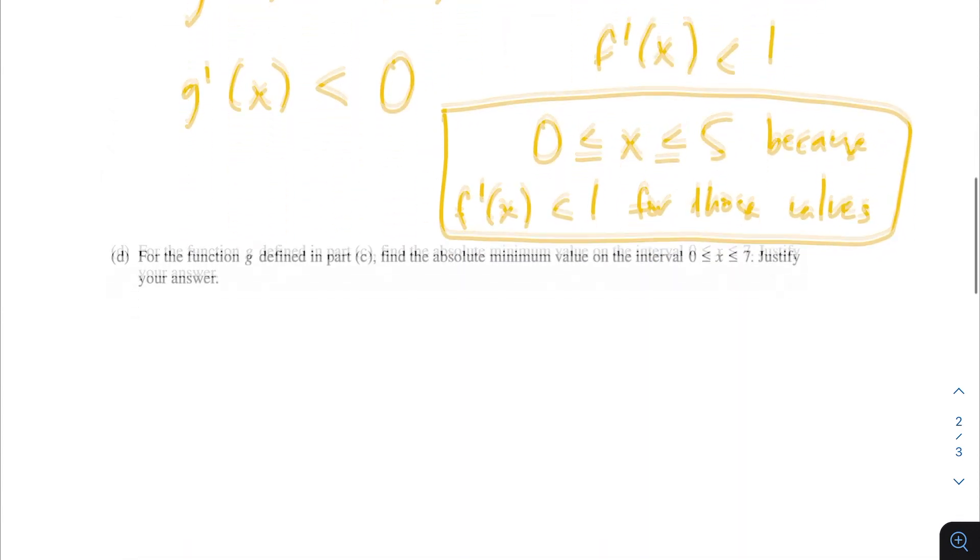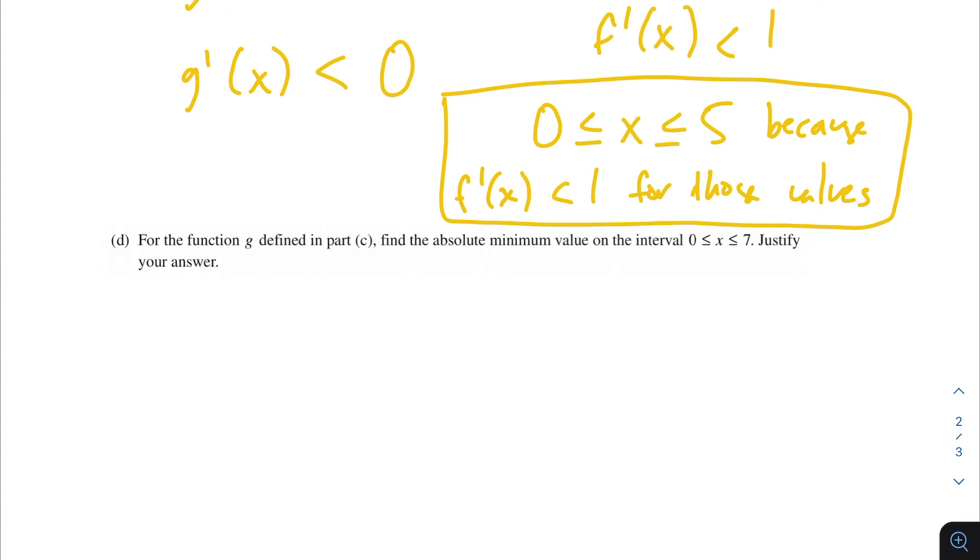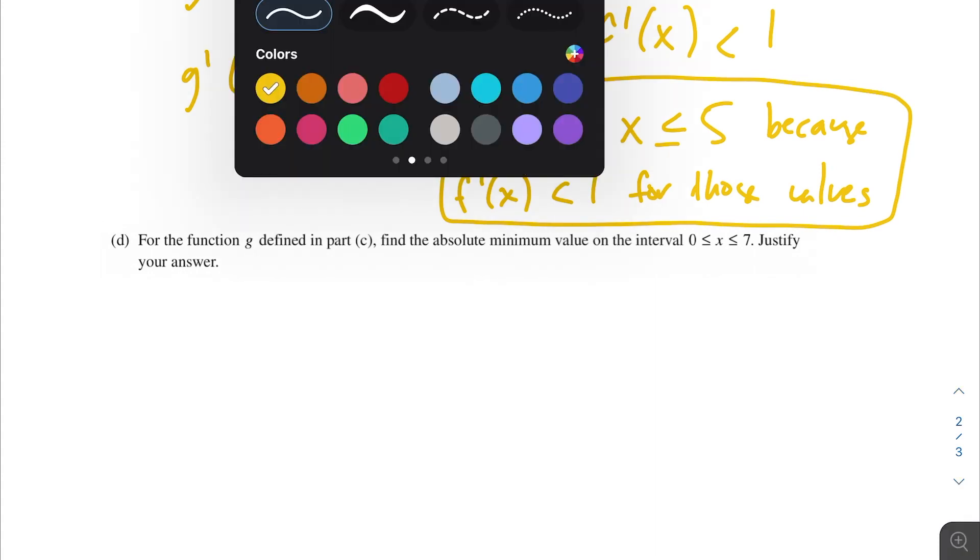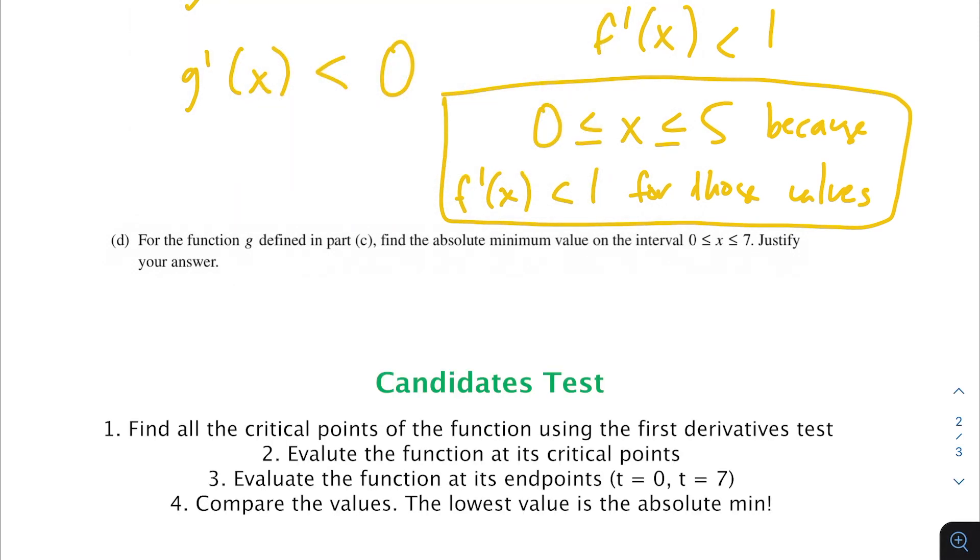Next problem: For the function g defined in part c, find the absolute minimum on the interval 0 < x < 7, justify your answer. It sounds like we are going to want to use the candidate test here. We're using the first derivative test to figure out the critical points of the function, and we're also using the ends of the domain, so that would be 0 and 7.